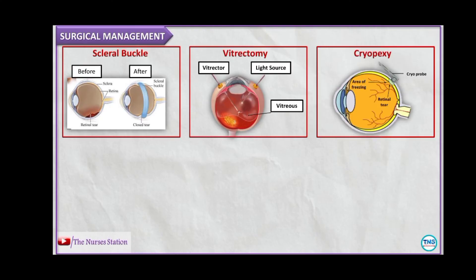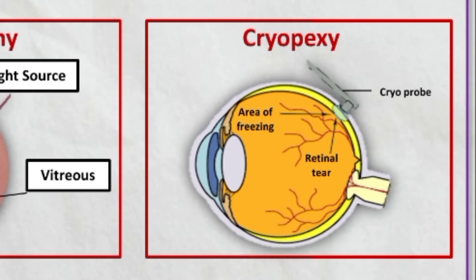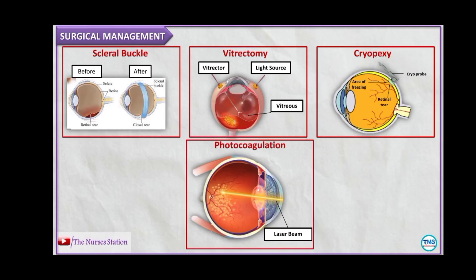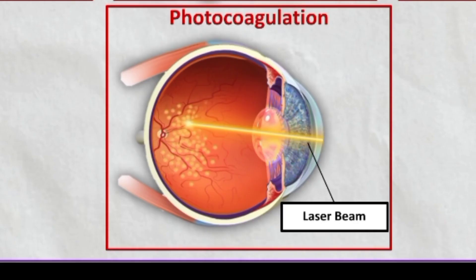In cryopexy, the surgeon uses a special probe to apply intense cold energy to freeze the retina around the tear, creating swelling that becomes scar tissue and sealing the retina back to the wall of the eye. In photocoagulation, a laser emits a beam of light that travels through the eye and burns the area around the retinal tear or detachment to create a scar. This scar tissue helps seal the tear or reattach a detached portion of the retina to the underlying tissue.